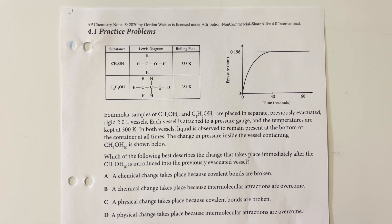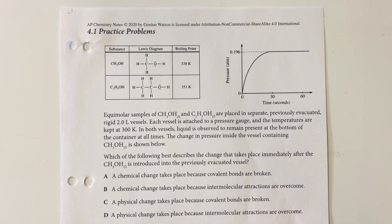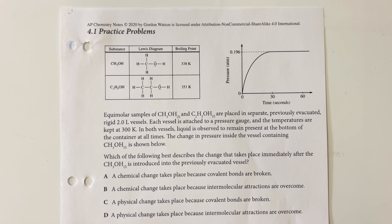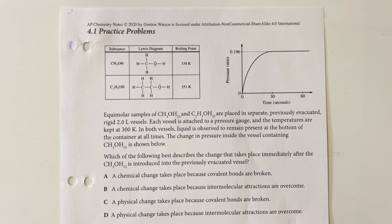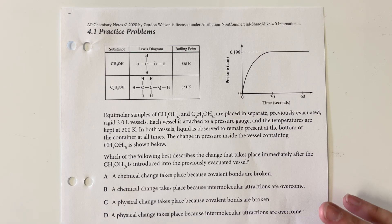Unit 4.1 Practice Problems. Equimolar samples of CH3OH and C2H5OH are placed in separate previously evacuated rigid 2-liter vessels. Each vessel is attached to a pressure gauge and the temperatures are kept at 300 Kelvin.